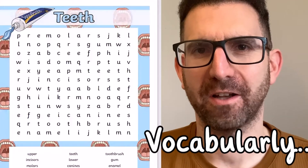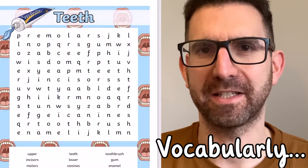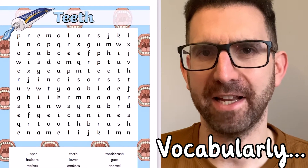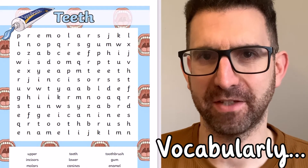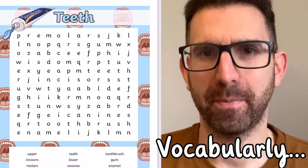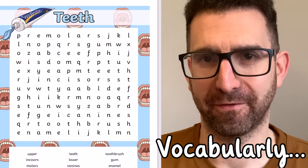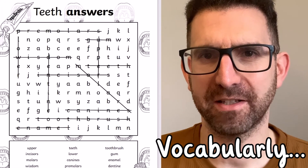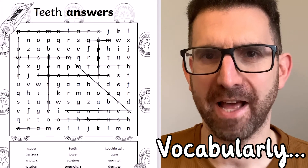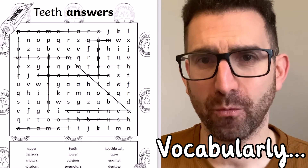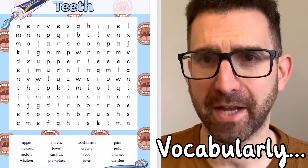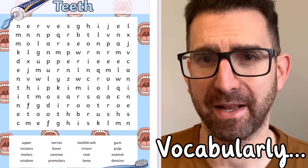For example, check out this teeth word search as a great introductory activity to a topic all about teeth. Words such as incisors, molars and enamel make it a great way for children to get to grips with new vocabulary and spellings.